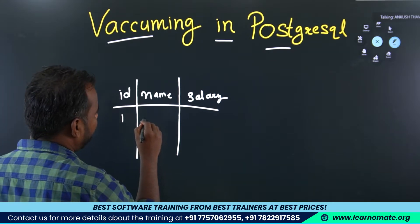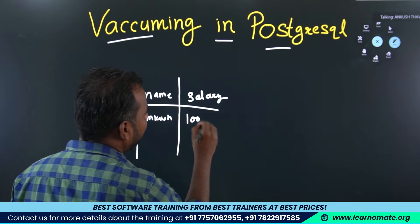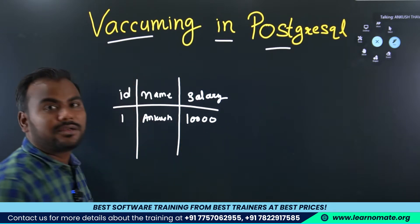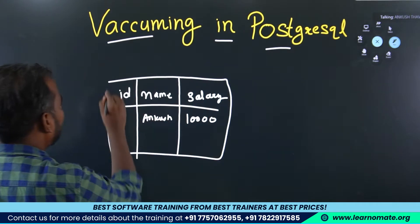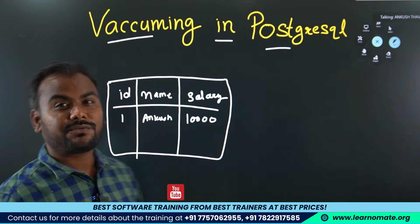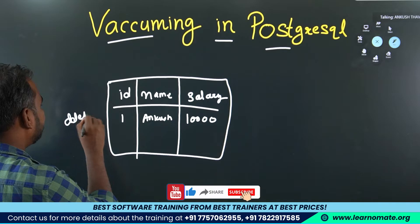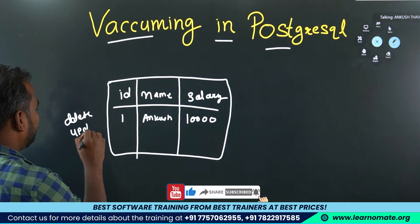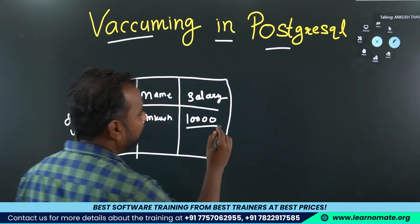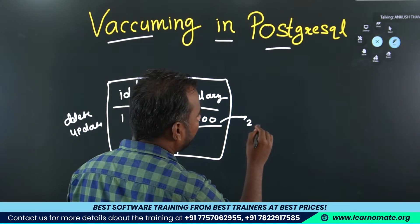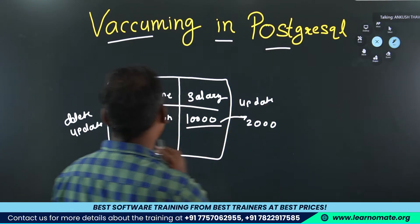We have a record where id is 1, name is Ankush, and salary is 10,000. Now on this table you are going to perform operations like delete or update. For example, I am changing the salary from 1,000 to 2,000 using the update command.